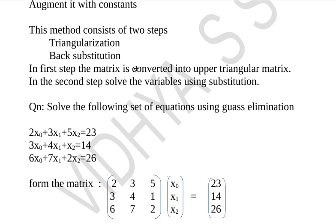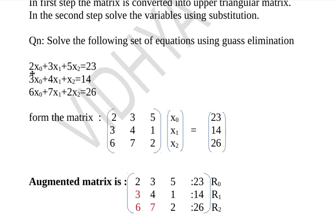Then we will do back substitution. Let's see with an example. My example is: 2x0 + 3x1 + 5x2 = 23, 3x0 + 4x1 + x2 = 14, 6x0 + 7x1 + 2x2 = 26. I have three variables as well as three equations, so first let me form the matrix.